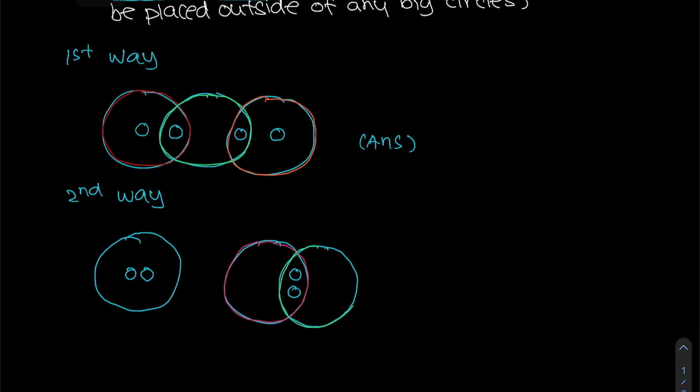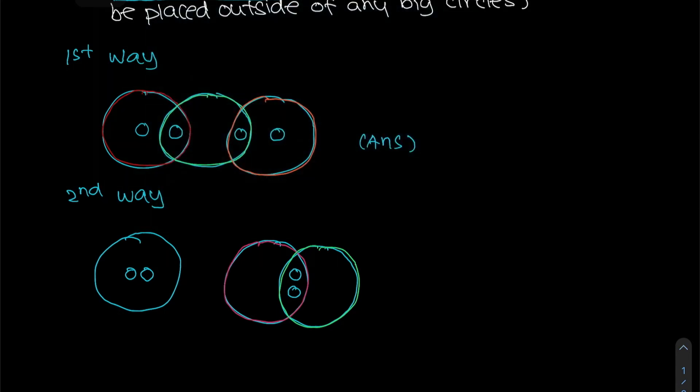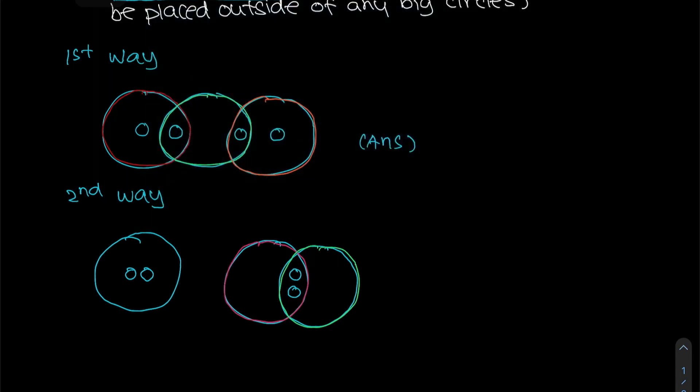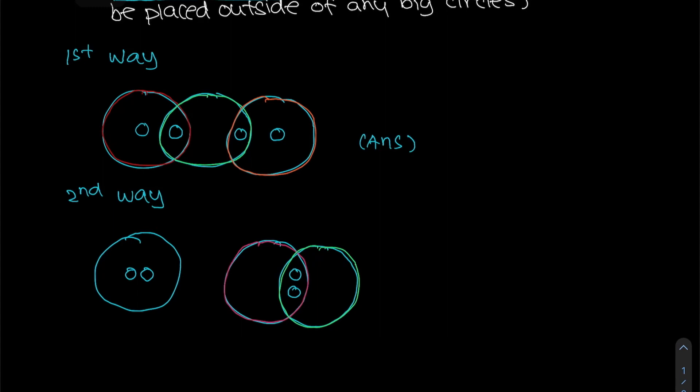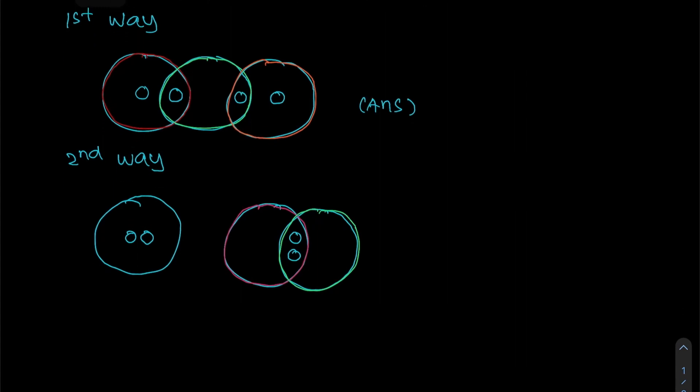And the one on the right will also have two small circles within which also satisfy your condition. Why is that so? It's because that these two circles that are overlap will happen in both circles. So that is your second way.